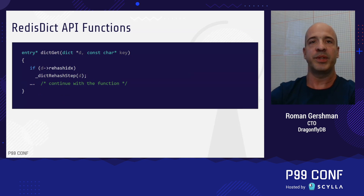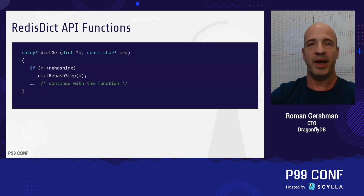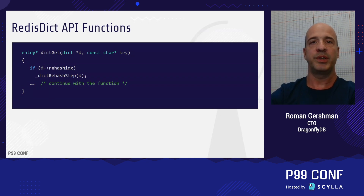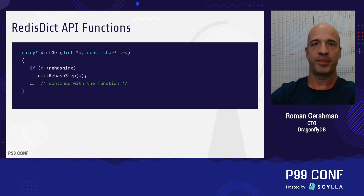Then it rehashes items gradually with each subsequent API call. Here on the slide, you can see how dictrehash step is triggered during the get operation, but it's the same for any other API call. So by removing the rehash part, Redis dictionary speeds up its resize operation for large tables and reduces the tail latency of its inserts.